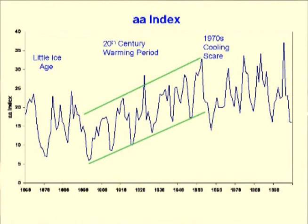And we are still two years off solar minimum. In the fullness of time, it might be demonstrated that the AA Index is more important than solar cycle amplitude in controlling the Earth's climate. But solar physicists don't predict the AA Index — they do predict solar cycle amplitude.